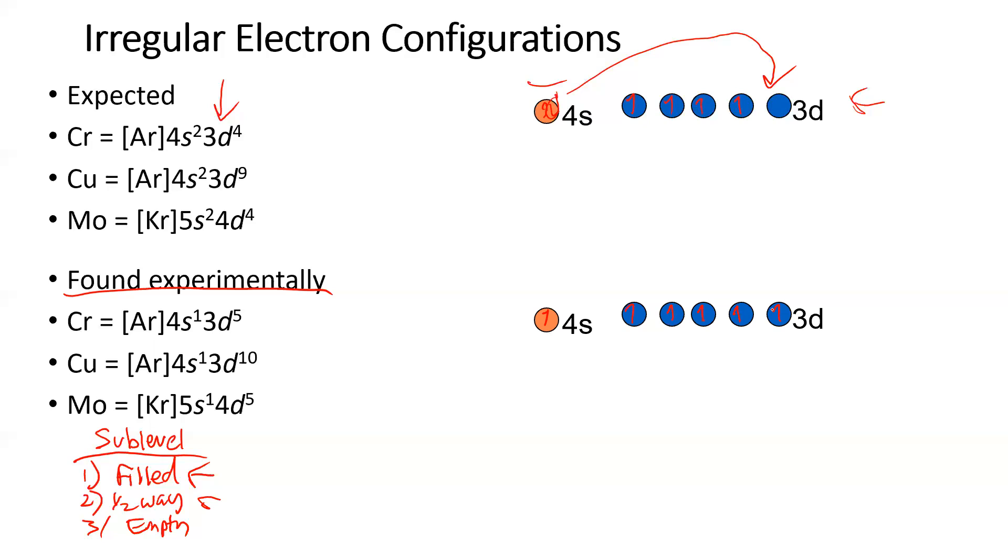Now why is it happy? Because the 4s sublevel, it's not filled like it was here, but it's halfway filled, and the 3d, which had nothing, is now halfway filled. So that's how I like to kind of explain it to students.